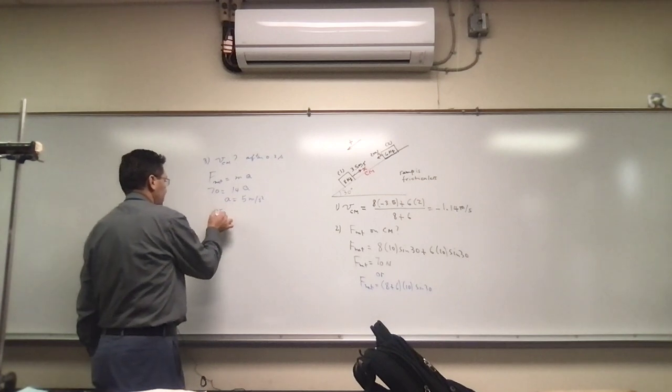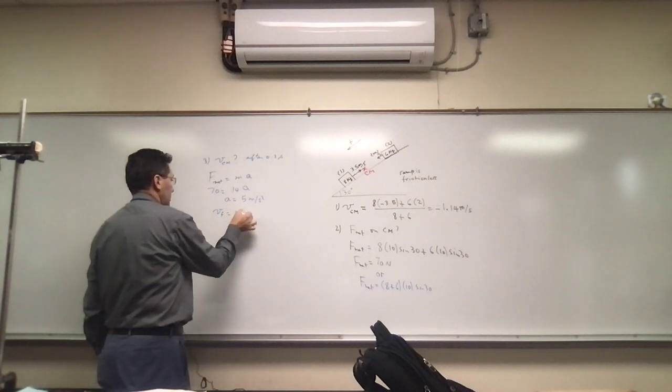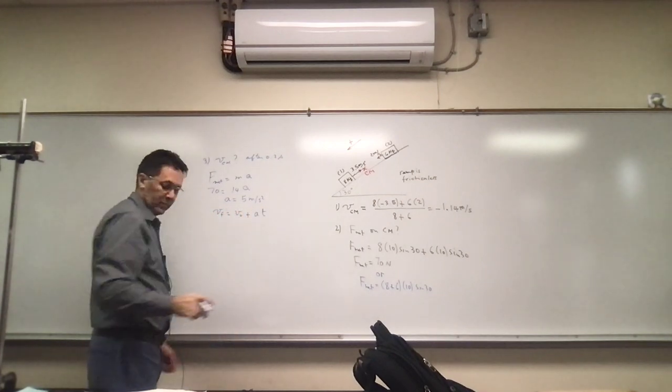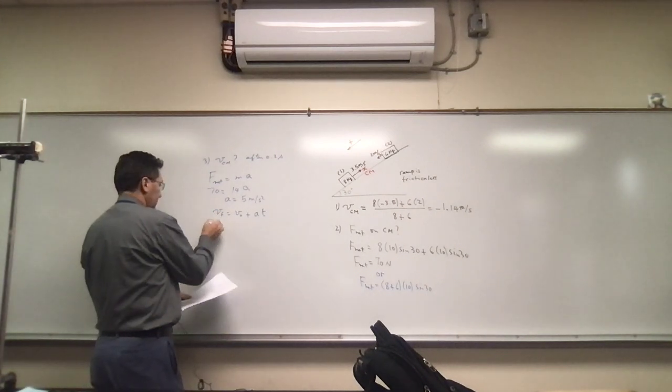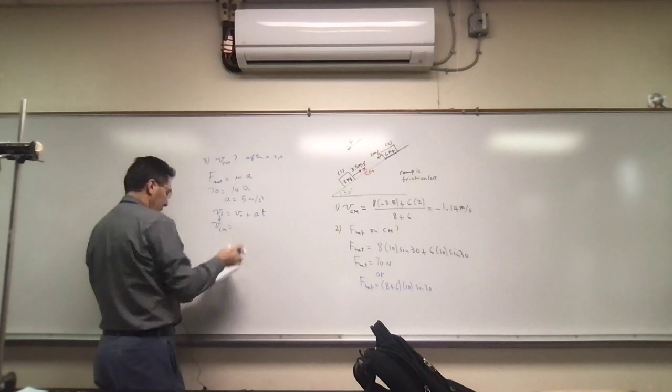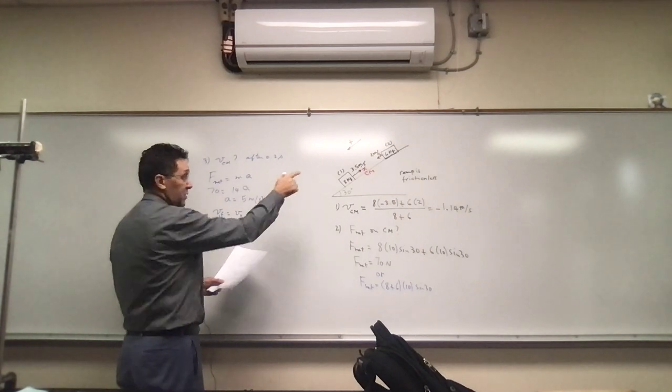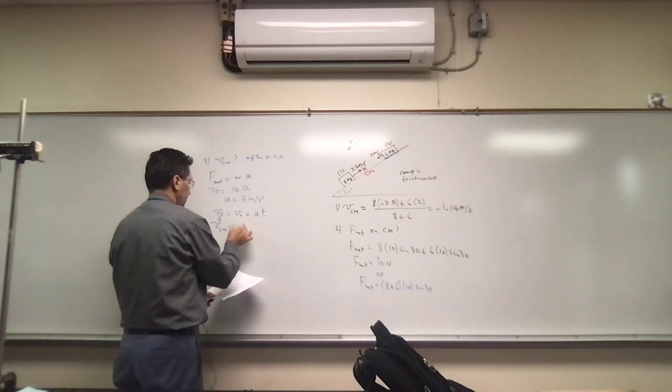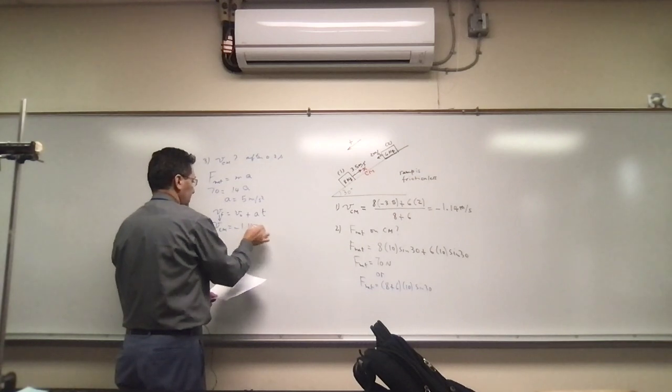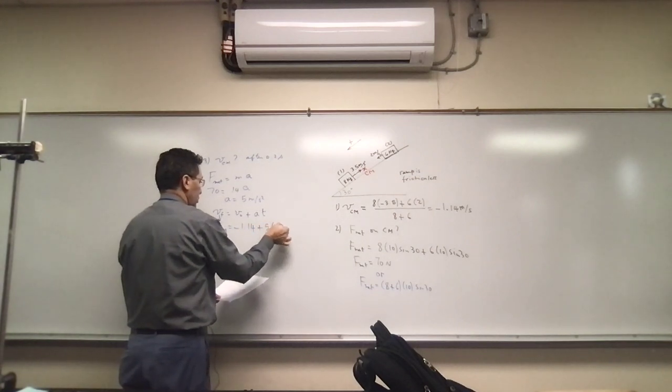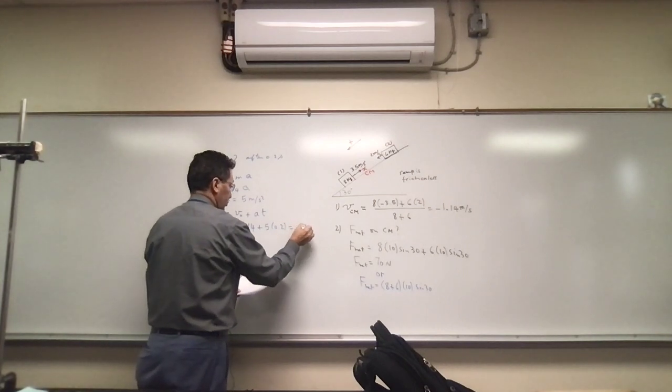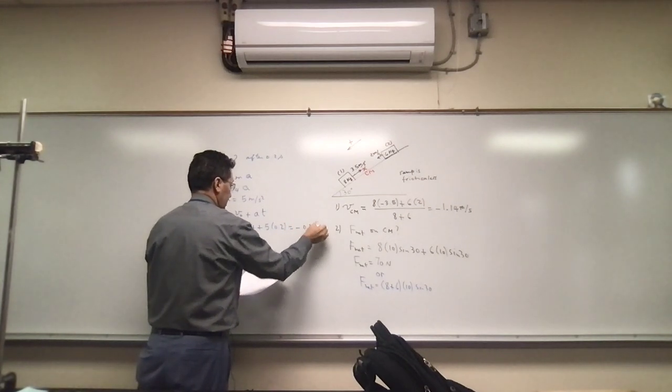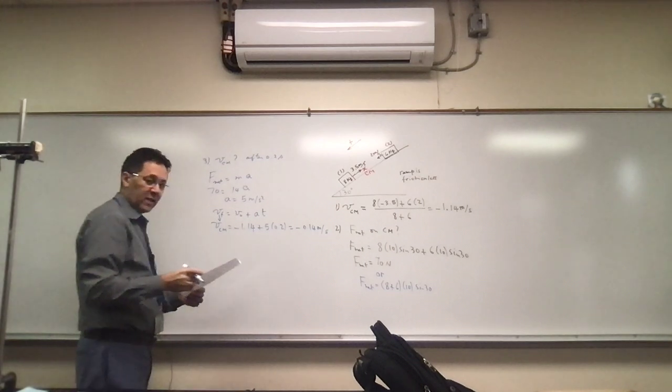Plus 5 times 0.2, which will give us negative 0.14 meters per second. So that's the velocity of the center of mass after 0.2 seconds.